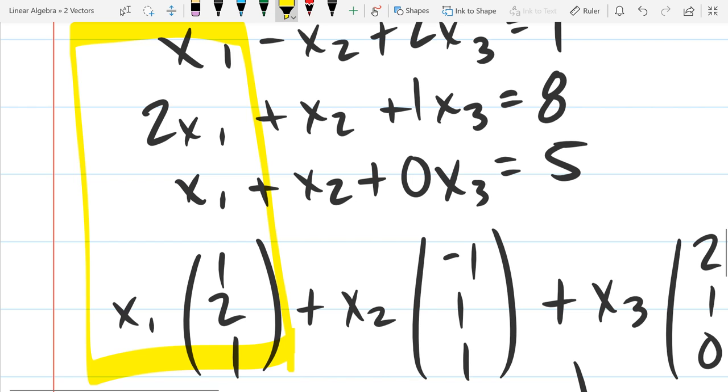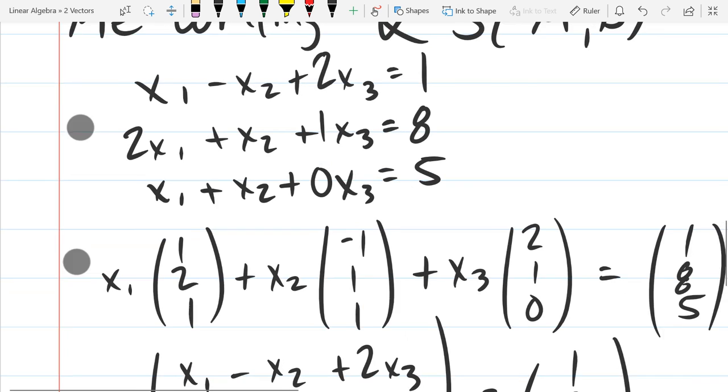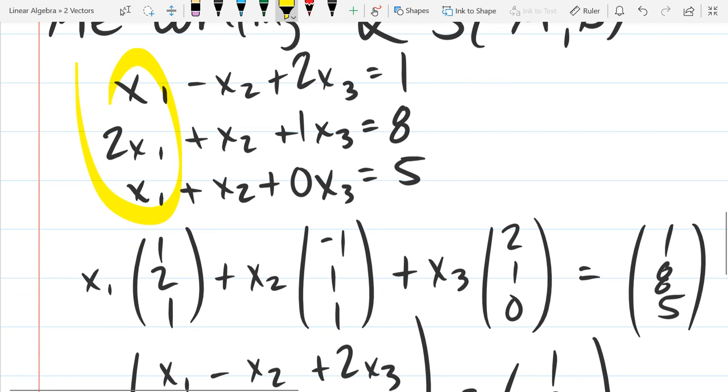There's kind of two ways to break down a linear system. One way is you can break it down, I guess you'd call this vertically right here, by column. So I can rewrite it as each of these coefficients as a column. And then the system becomes a linear combination of those column vectors.